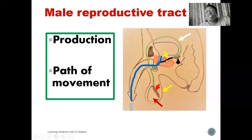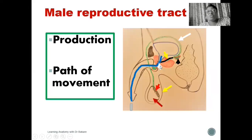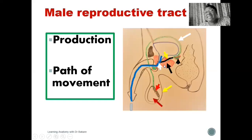The ejaculatory duct is a short duct that runs a short course. From it, the ejaculate is directed into the prostatic urethra, arrowed in white. The prostatic urethra is the region of the urethra that runs through the prostate gland, arrowed in black. The prostate gland is located at the neck of the urinary bladder. As the ejaculate is pushed into the prostatic urethra, the prostate gland also releases its own secretions into the ejaculate — it is one of the male accessory reproductive organs that helps to nourish the sperm.